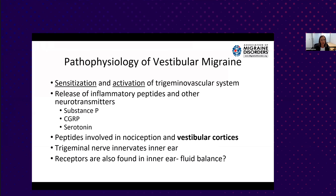What do we think is going on with vestibular migraine? Probably something similar to migraine headaches and other migraine symptoms: sensitization and activation of the trigeminovascular system. The trigeminal nerve—the fifth cranial nerve, the largest one—innervates the face, mainly with sensory input. When this is activated, there's a release of inflammatory peptides including substance P, CGRP, and serotonin, all of which are involved in pain and nociception.